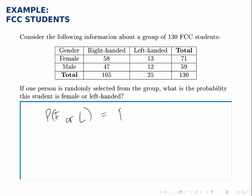An or probability is the sum of the individual probabilities minus the overlap.